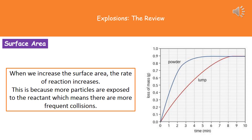To illustrate that, on the graph the red line shows the rate for a lump of our reactant and the blue line shows the same for the powder. Because we've used the same mass of lump and powder, we will make the same total loss of mass at the end, which is why both lines come to the same level. But the powder has a faster rate of reaction, meaning a faster loss in mass, so its line is steeper and to the left of the line for the lump.